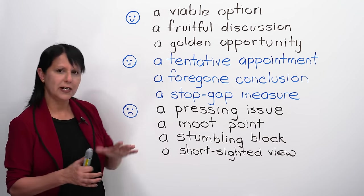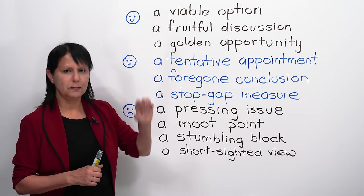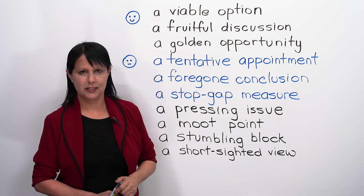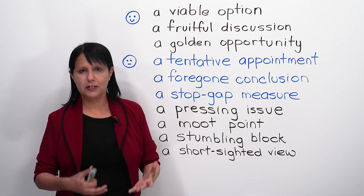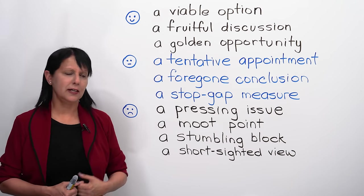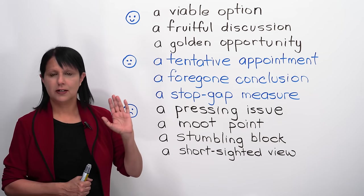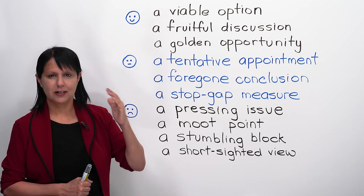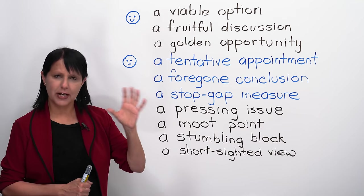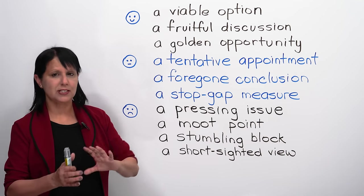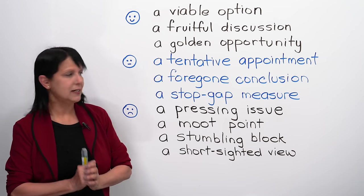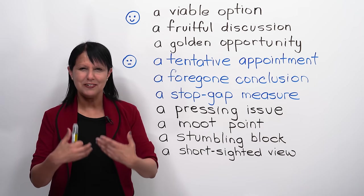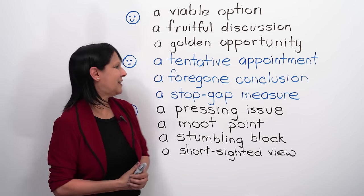Next. Now, these next three are kind of neutral. They're not good or bad, they're just sort of factual. So, we have here a tentative appointment. Appointment, you know, because you make appointments all the time, but if you say, we have a tentative appointment to meet on Monday at three o'clock. So, tentative means not certain, not fixed. It's kind of just for now, that's what we've said, but it might change, it's not confirmed. So, that's tentative. Say it after me, a tentative appointment. Good.